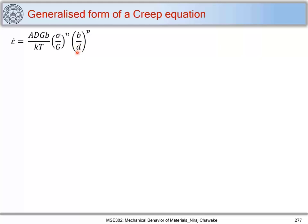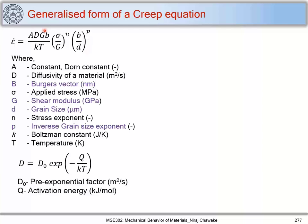Now let's look at the generalized form of the creep equation. We can write the strain rate with respect to stress and grain size. To make it generalized for material behavior, we normalize stress using the shear modulus, and we normalize grain size using the Burgers vector. Here, D takes care of diffusion-based phenomena and can be written as D0 times exp(-Q/kT). The term sigma/G accounts for dislocation-based mechanisms, and B/d accounts for microstructural factors. That is how we get a generalized form for the creep equation. This relation is empirical.